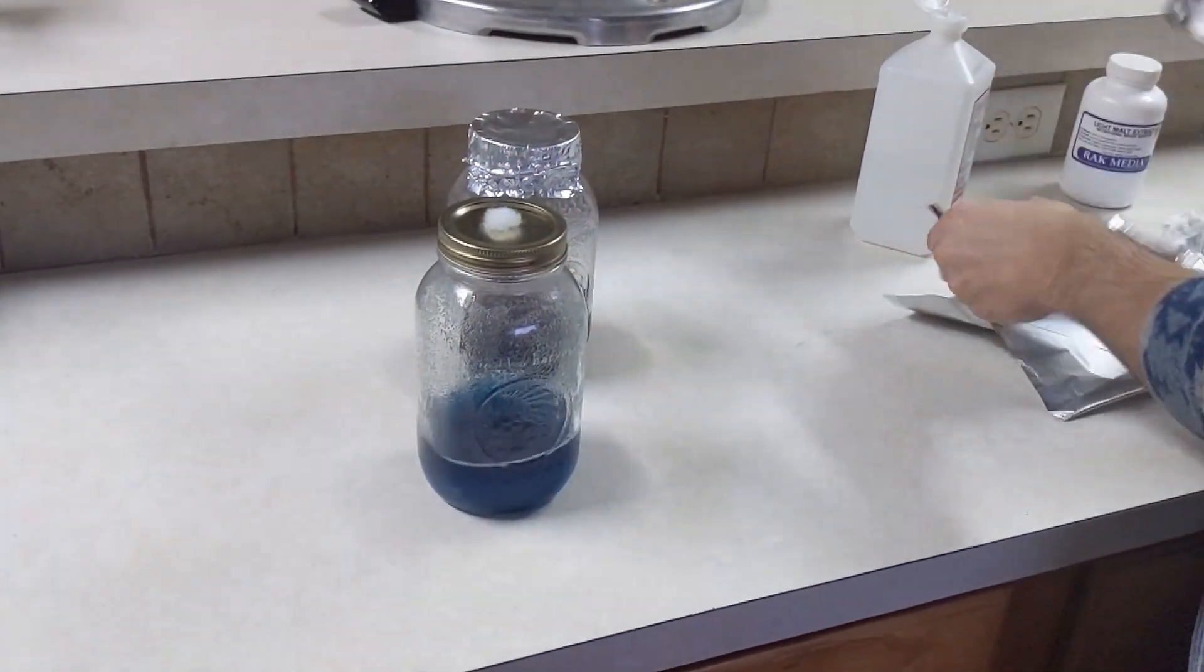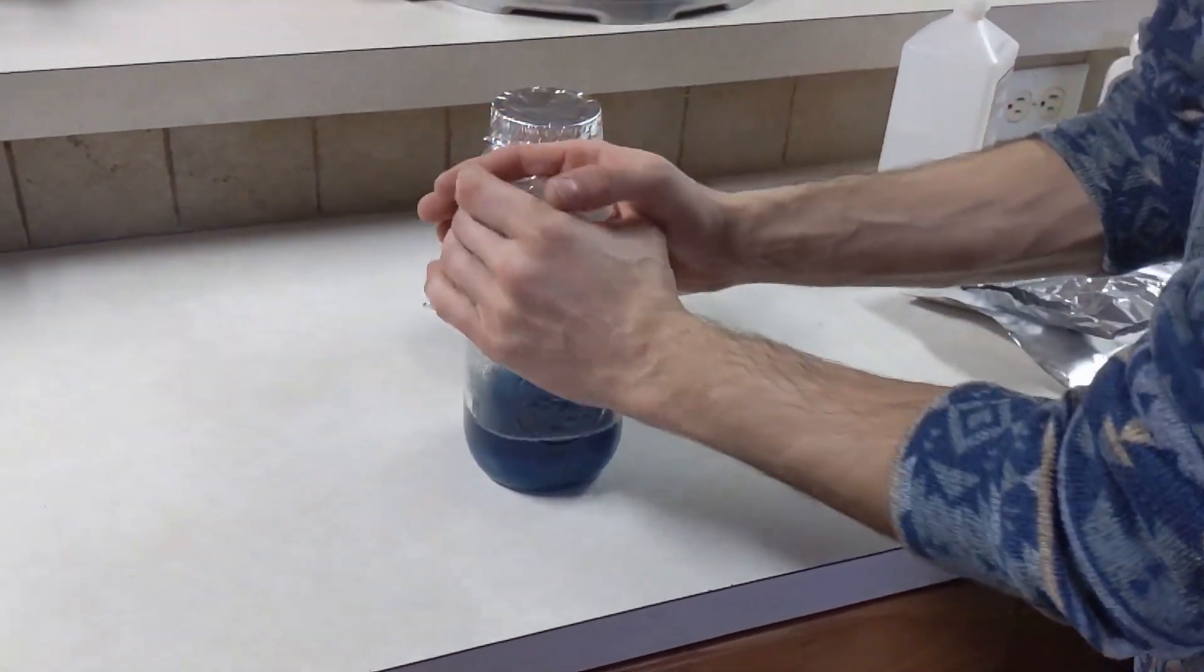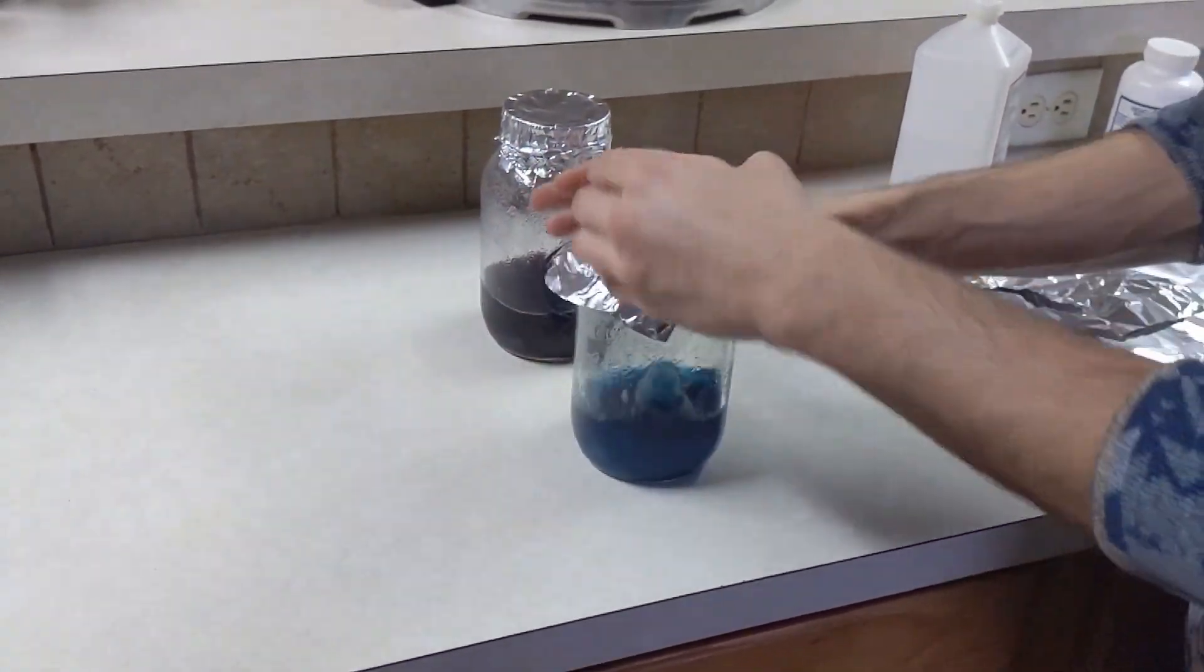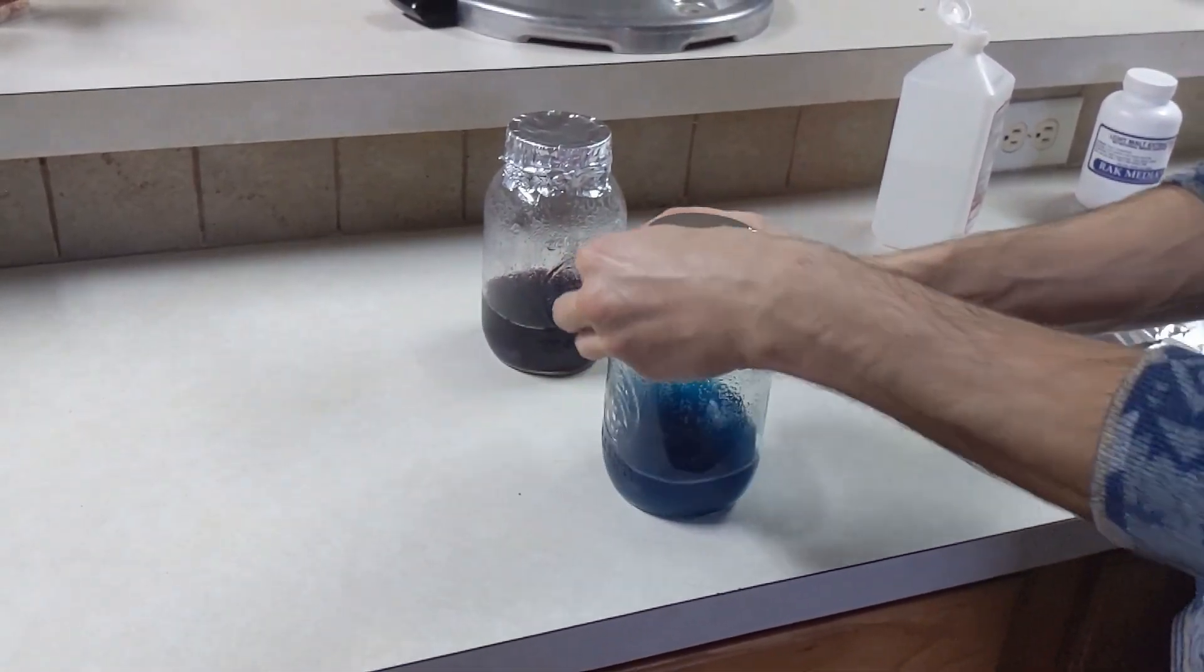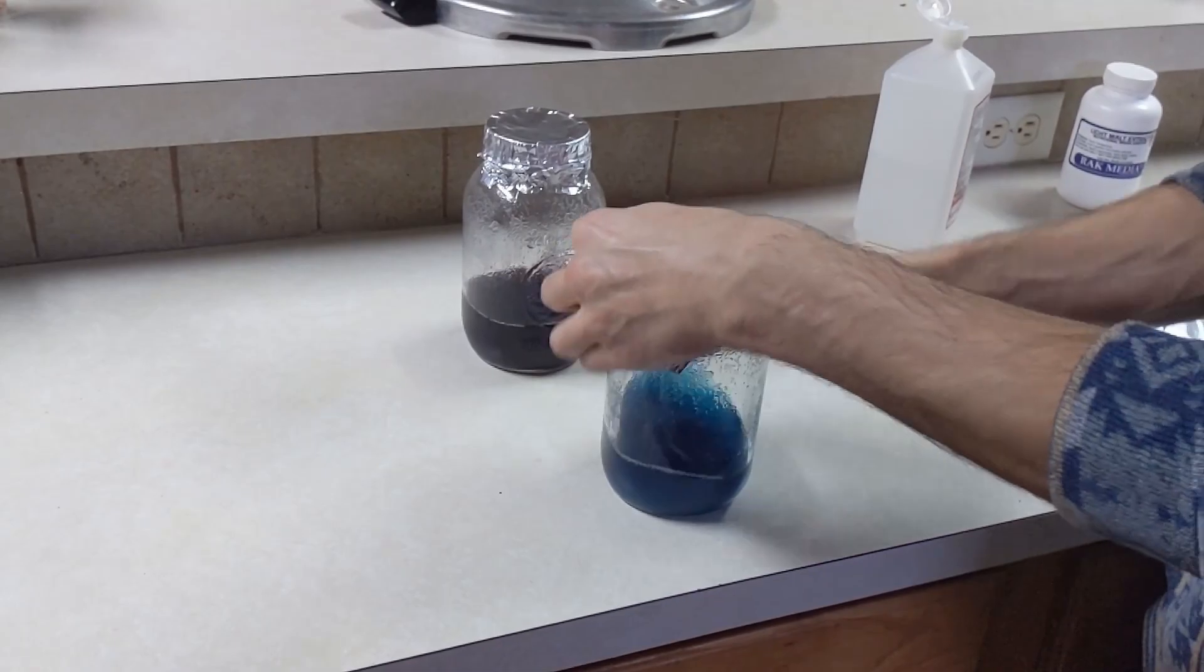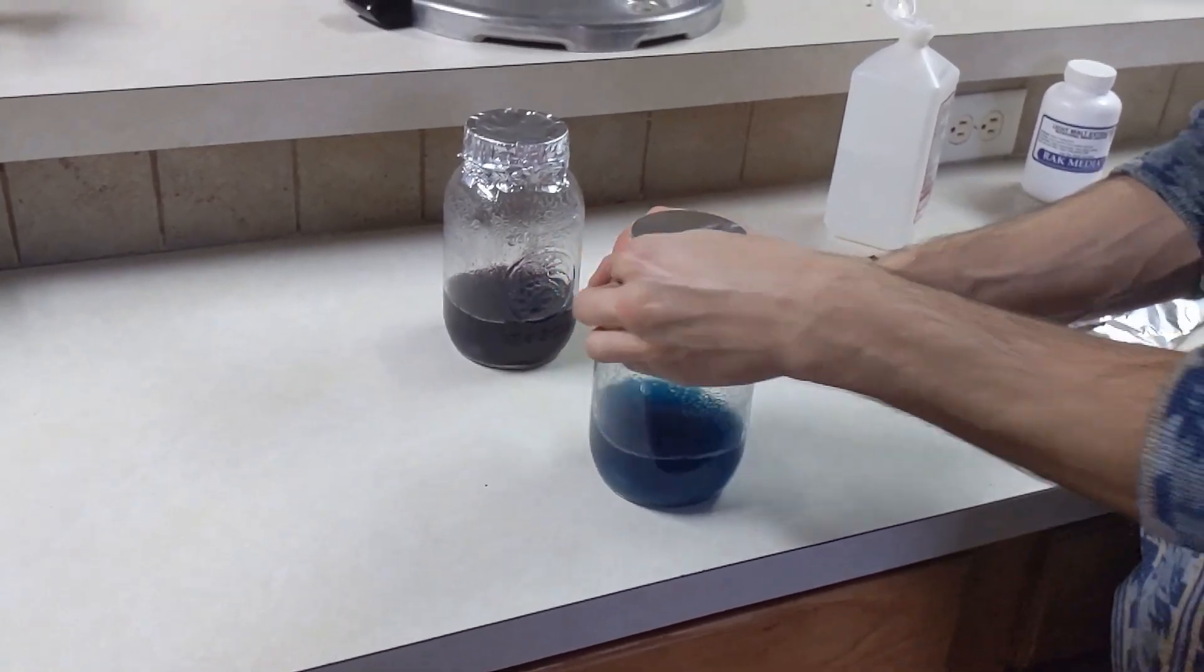And the aluminum foil is to block any water droplets from hitting the top of our jars and possibly hitting our filter and then going into the mixture itself. And then that could actually ruin things a little bit.